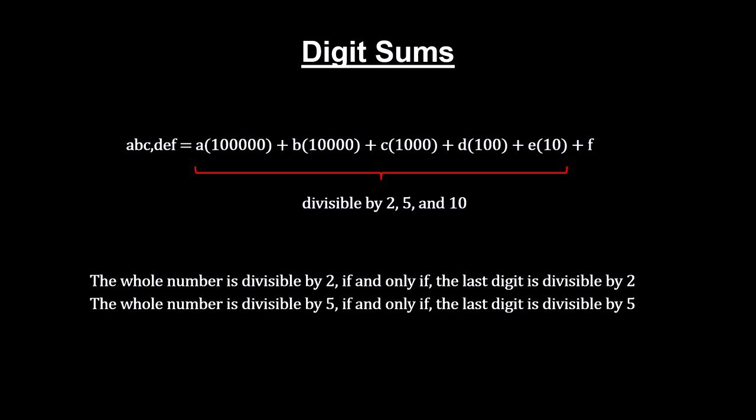If the last digit is divisible by 5, then the whole number is divisible by 5. And if the last digit is 0, the whole number is divisible by 10.